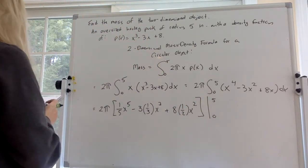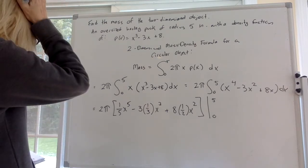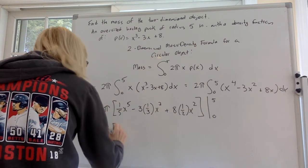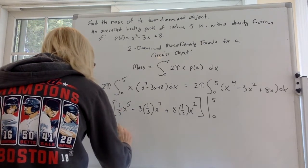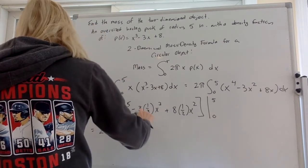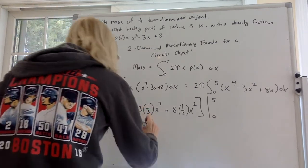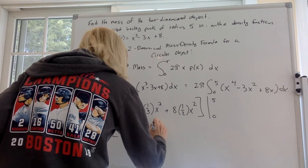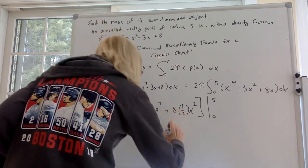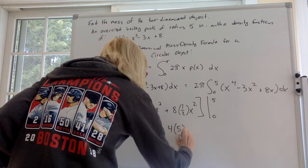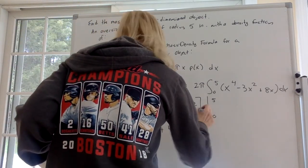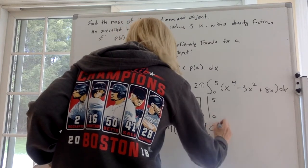I think at this point, I just plugged in, equals 2 pi. So one-fifth, 5 to the 5th minus, the 3's canceled out, 5 cubed plus, 8 over 2 is 4, 5 squared, minus, plugging in a 0, you get all 0s.